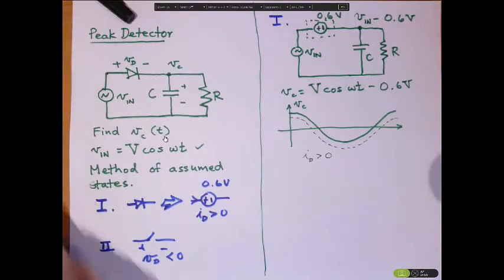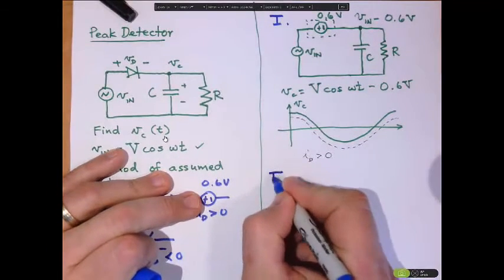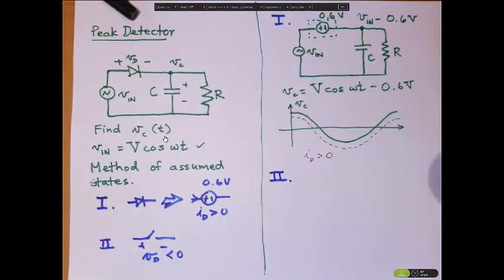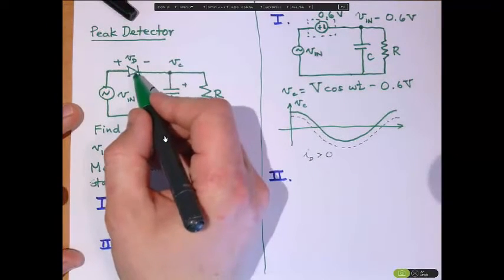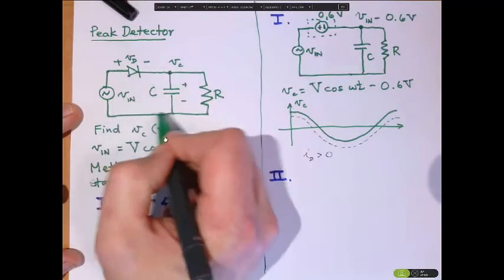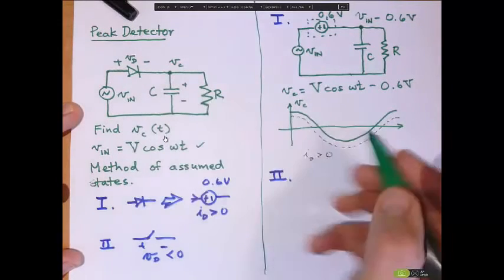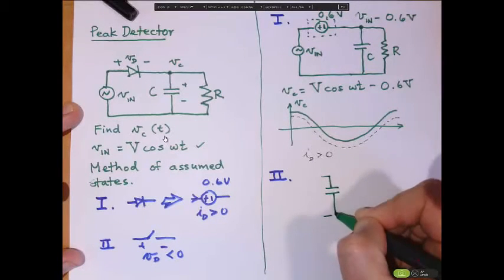So now let's look at phase two. In state two, the circuit is pretty easy to draw. Because this is just an open circuit up here, we know no current can flow through here. Because we're interested in Vc, we can actually just ignore everything other than the capacitor and the resistor.